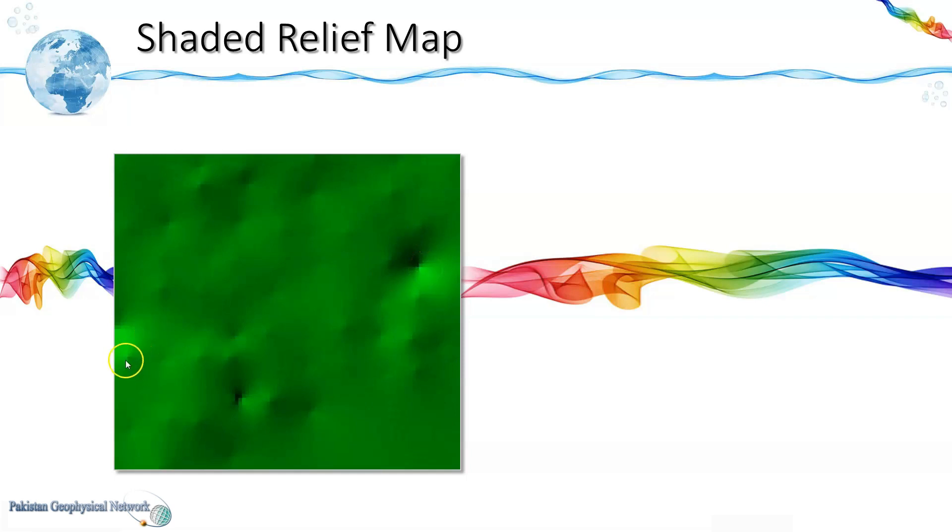Similarly this is an elevated portion. Here we can see the brighter part towards the light source and this is a darker part. So in this way this is a shaded relief map of a mono color and we can see it gives the impression of highlighting the topographic features.